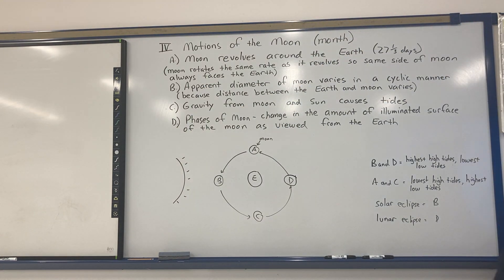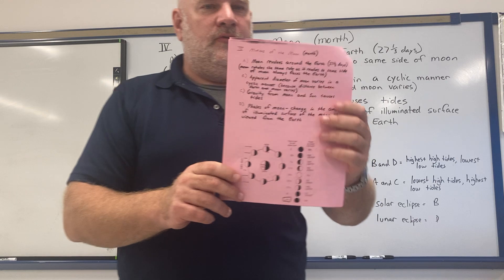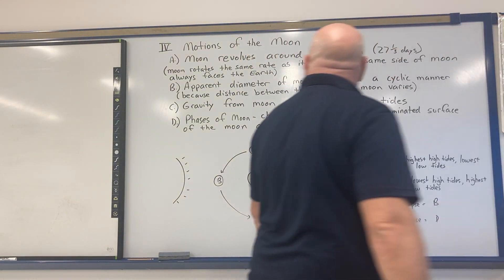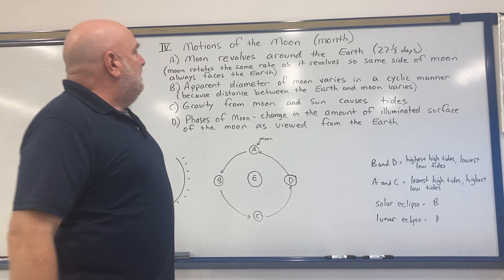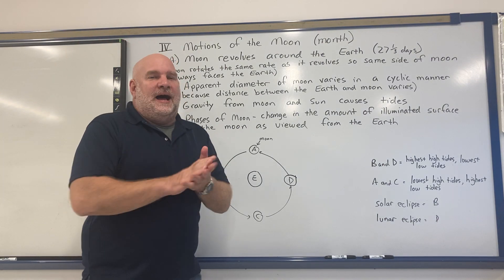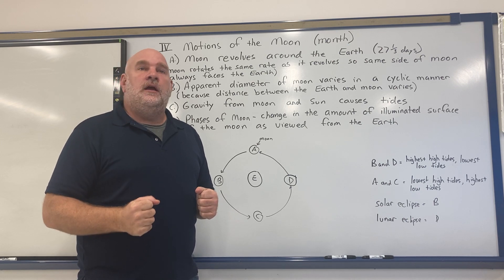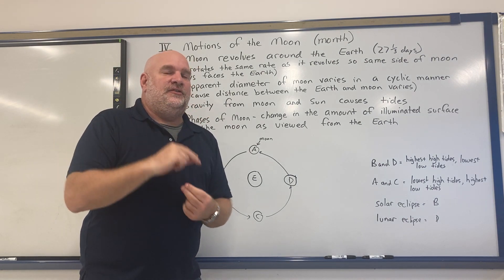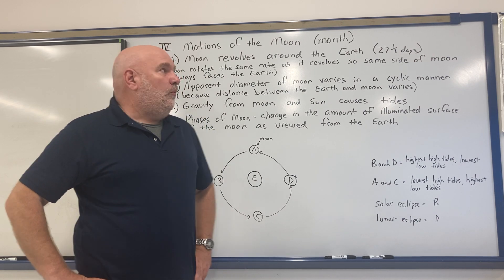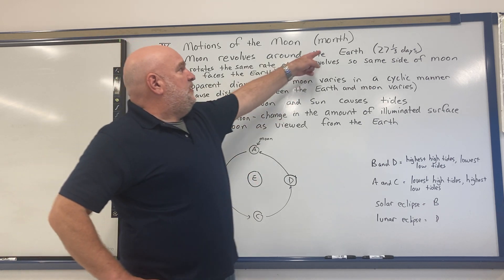What we're looking at today is the next page in your notes, dealing with the motions of the moon. The movement of various bodies gives us units of time — one Earth rotation is a day, one Earth revolution is a year. The motions of the moon give us the unit of the month.